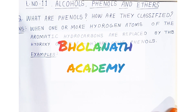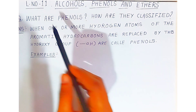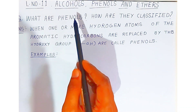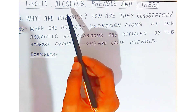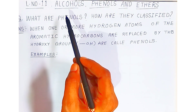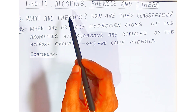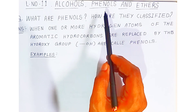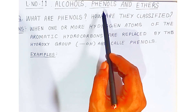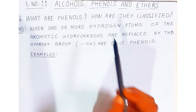Hello students, once again welcome to Bholanath Academy. In this video students, we are going to see lesson 11 - alcohols, phenols and ethers. In the last video students, we have seen what are alcohols and how they are classified. In this video students, we are going to see the definition of phenols, ethers and their classification.